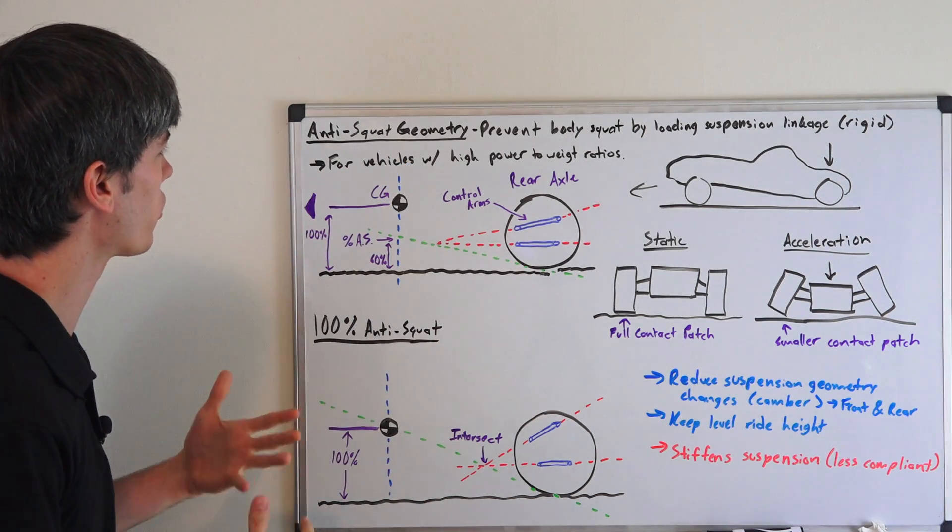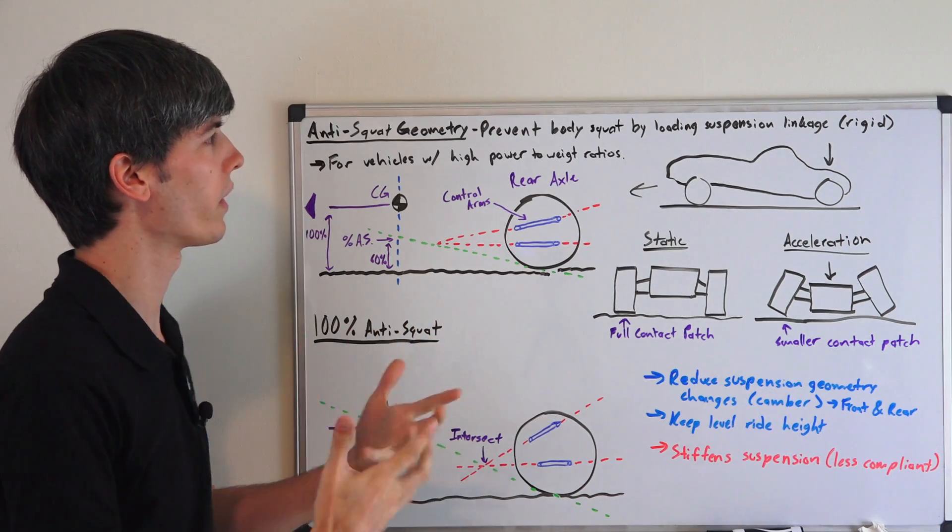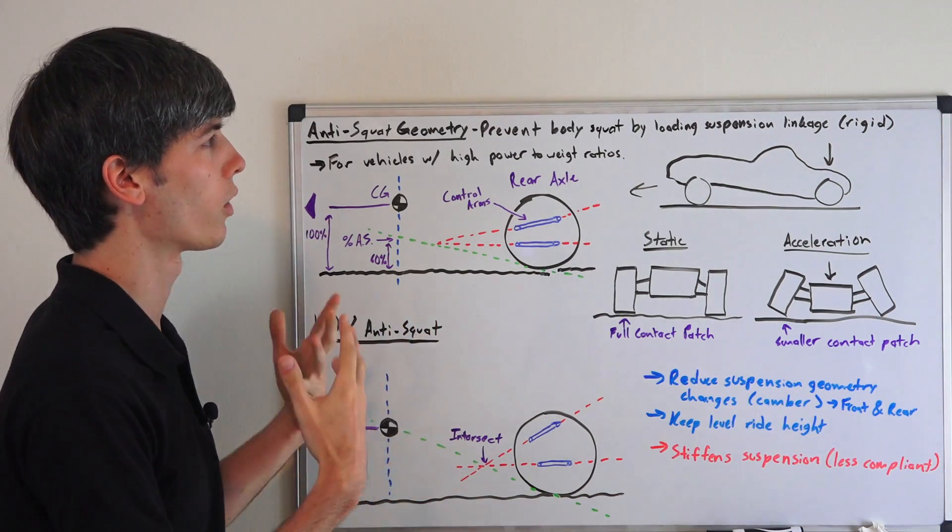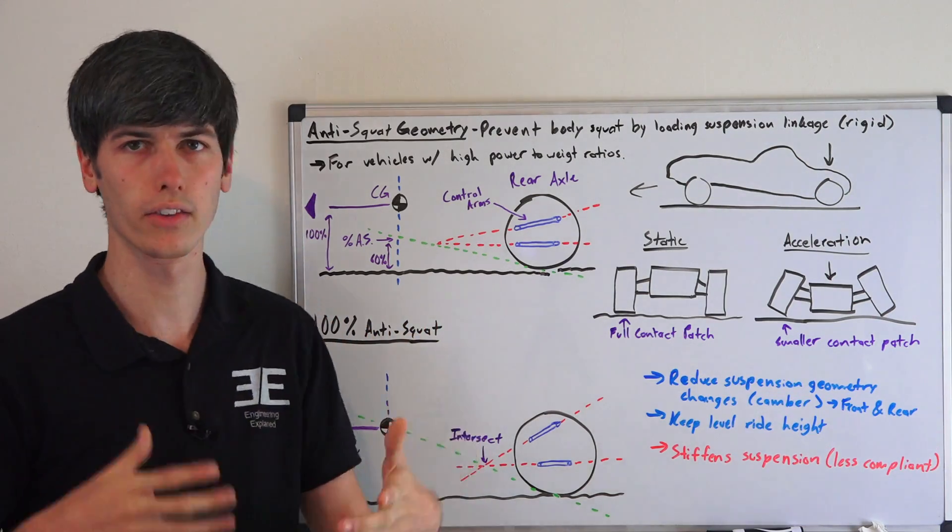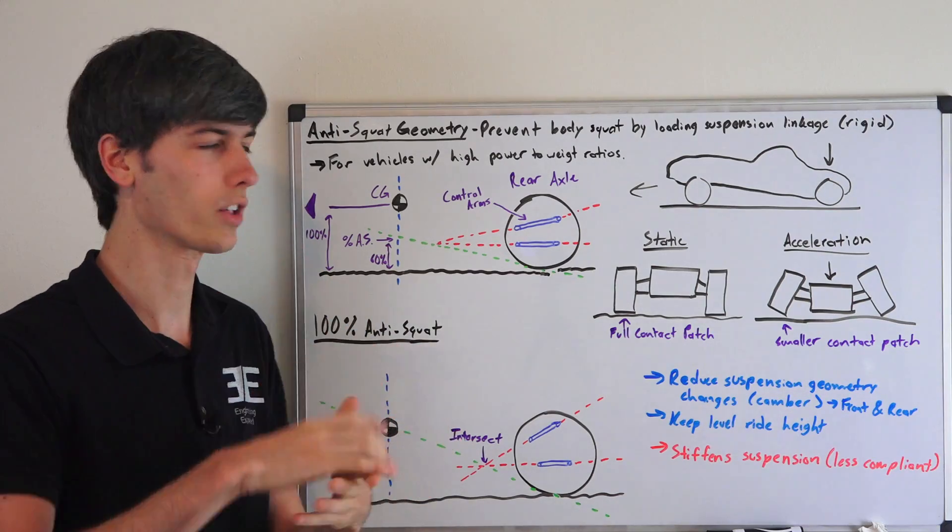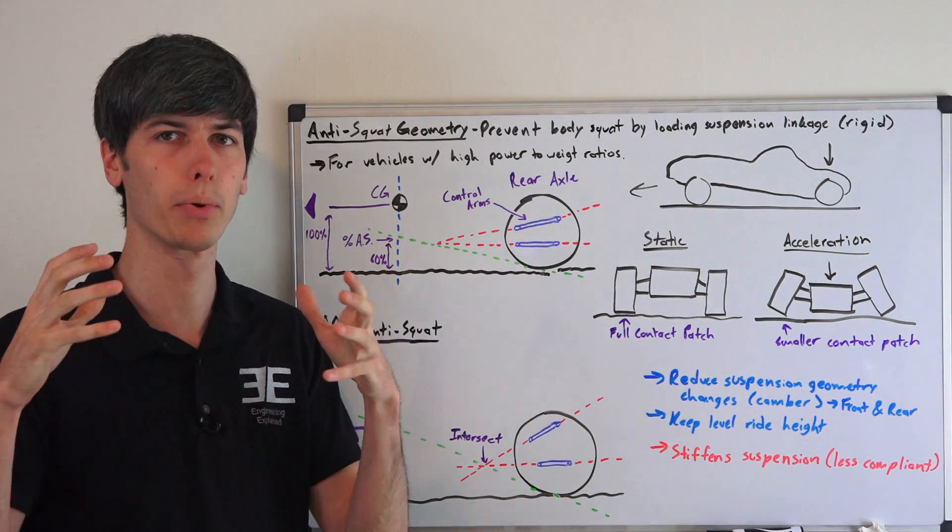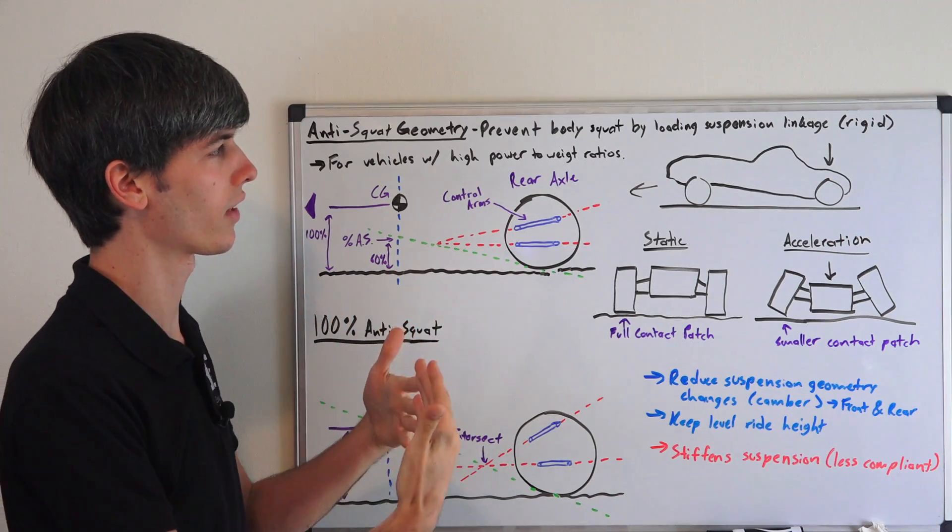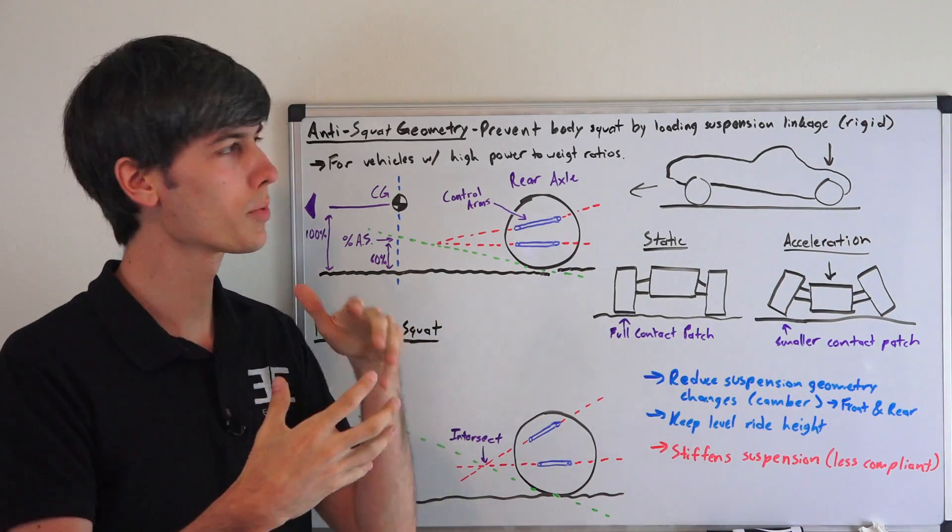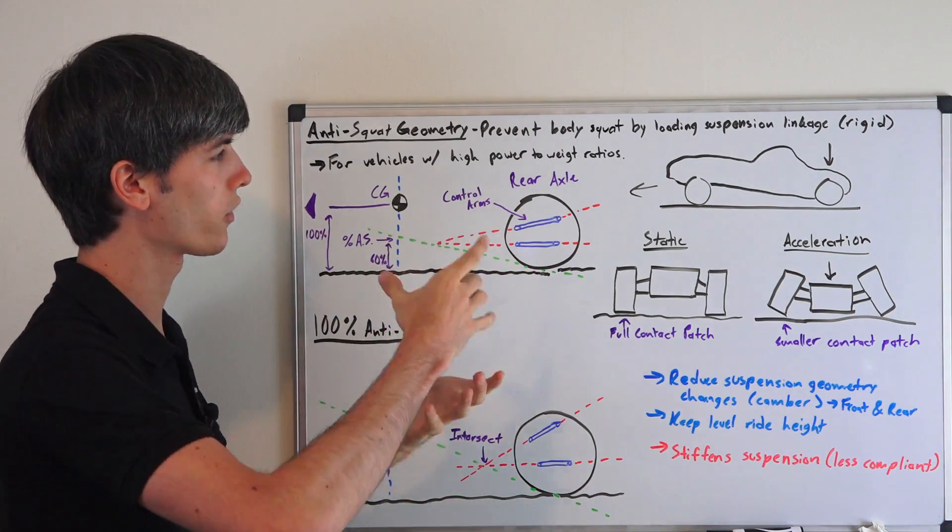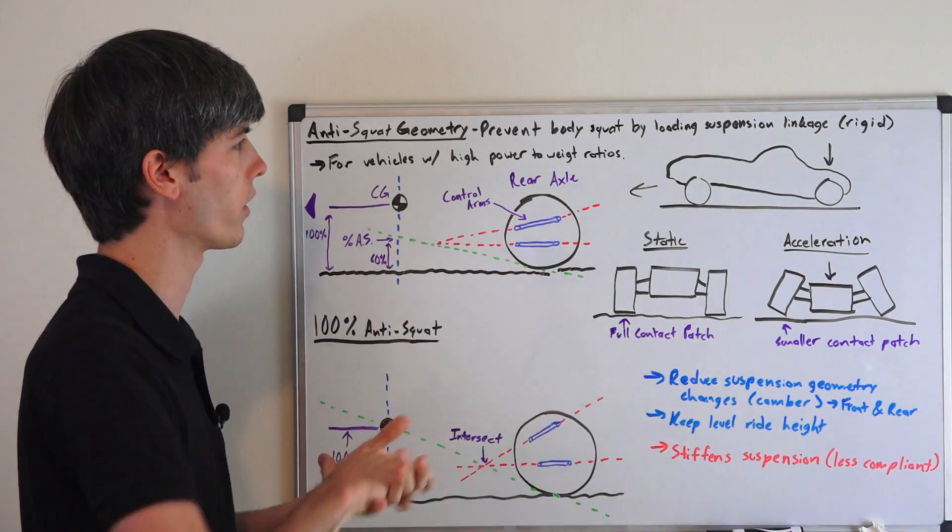Basically the idea of anti-squat geometry is that you want to prevent body squat by loading the suspension linkage rather than the suspension, the springs and the shocks. So what you're doing essentially is putting the force of accelerating into your control arms, your suspension linkage, rather than that spring and shock so that the rear of the vehicle doesn't compress.